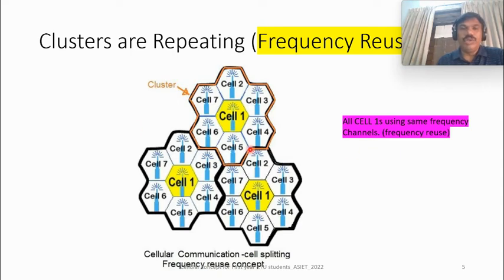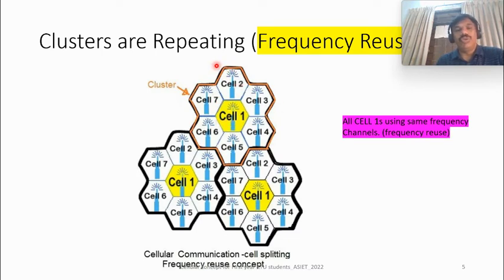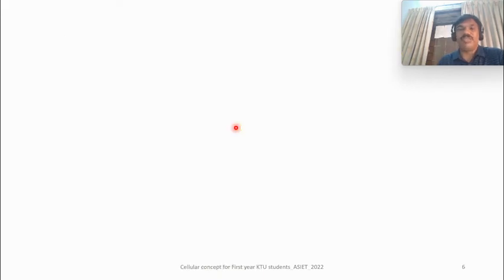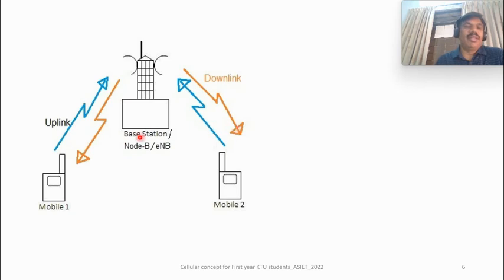For exam purposes, you need to draw the envelope only — just as in AM we are concerned about the envelope. Mark the center cell as cell one and state that the highlighted cells are using the same channels — those are called co-channel cells, and that concept is called frequency reuse. This figure is taken from SlideShare.